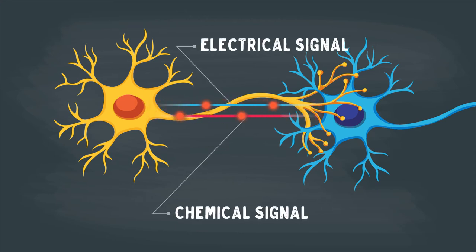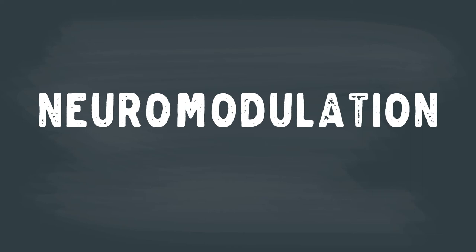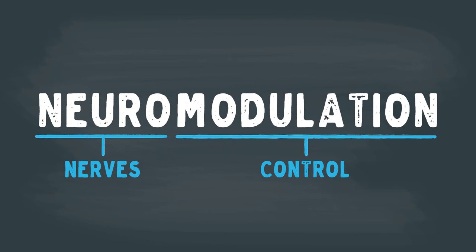Over the years, we've learned to speak directly to these neurons to help control their behavior. In the medical world, we call this neuromodulation. Breaking that up, neuro is for nerves, modulation is for control.